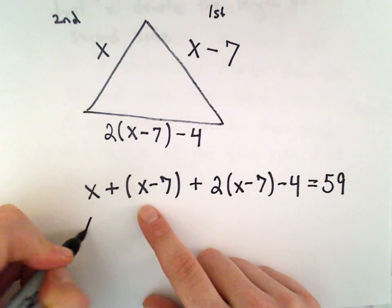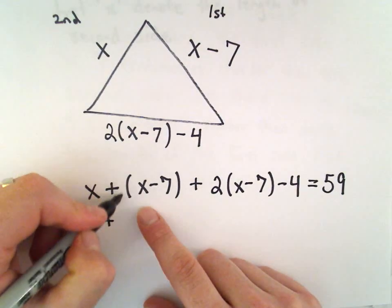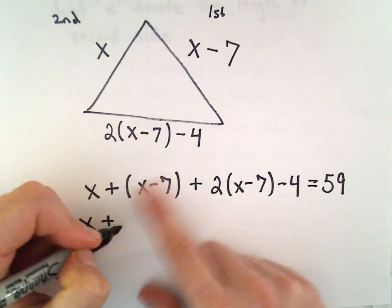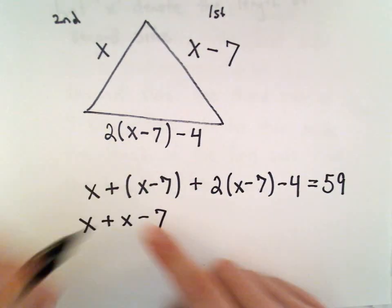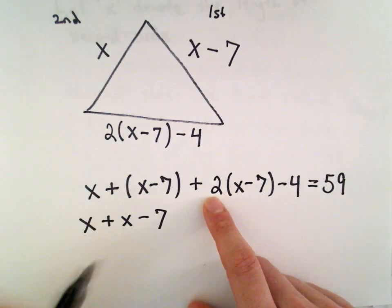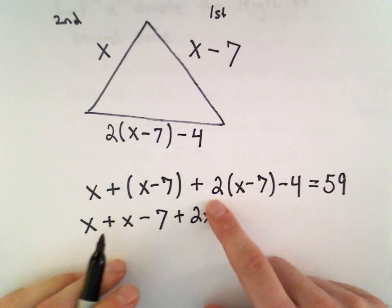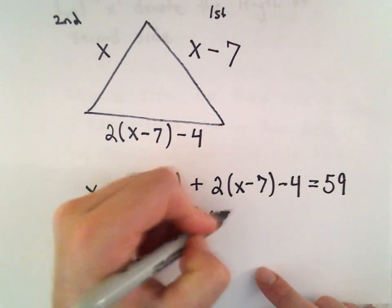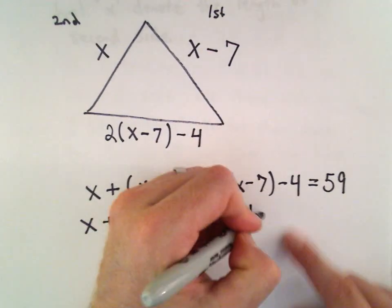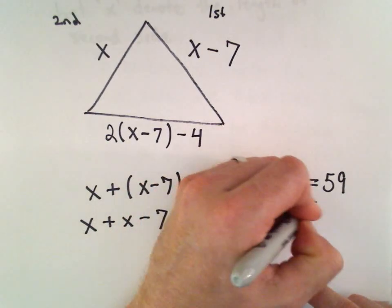If we get rid of parentheses, you can imagine there's just a positive 1 here. So, if you distribute, you can just get rid of the parentheses. When we distribute the positive 2, we'll get positive 2x. 2 times negative 7 is negative 14. I'll just leave the negative 4 alone for a moment.